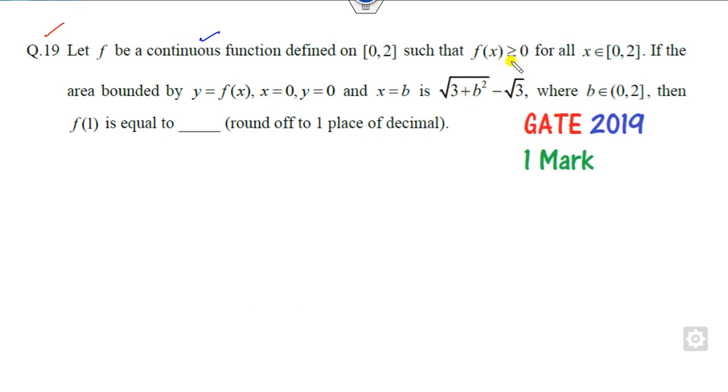The function is continuous and positive, bounded between 0 and 2. If any function is there, let's say this is my function which is continuous. Here x = 0, here y = 0, and here x = b.